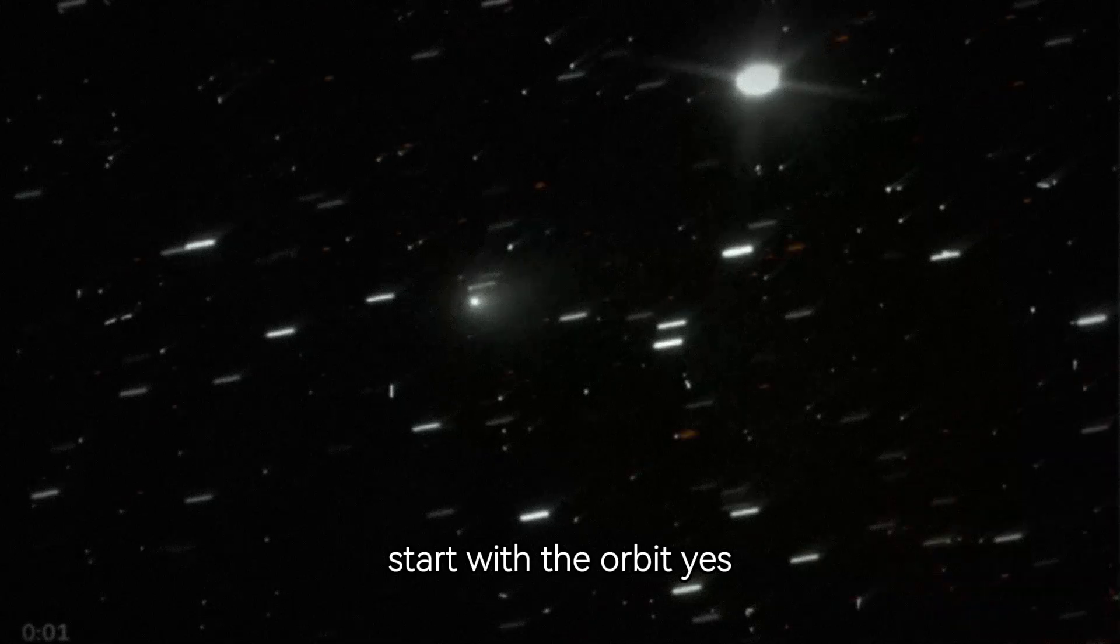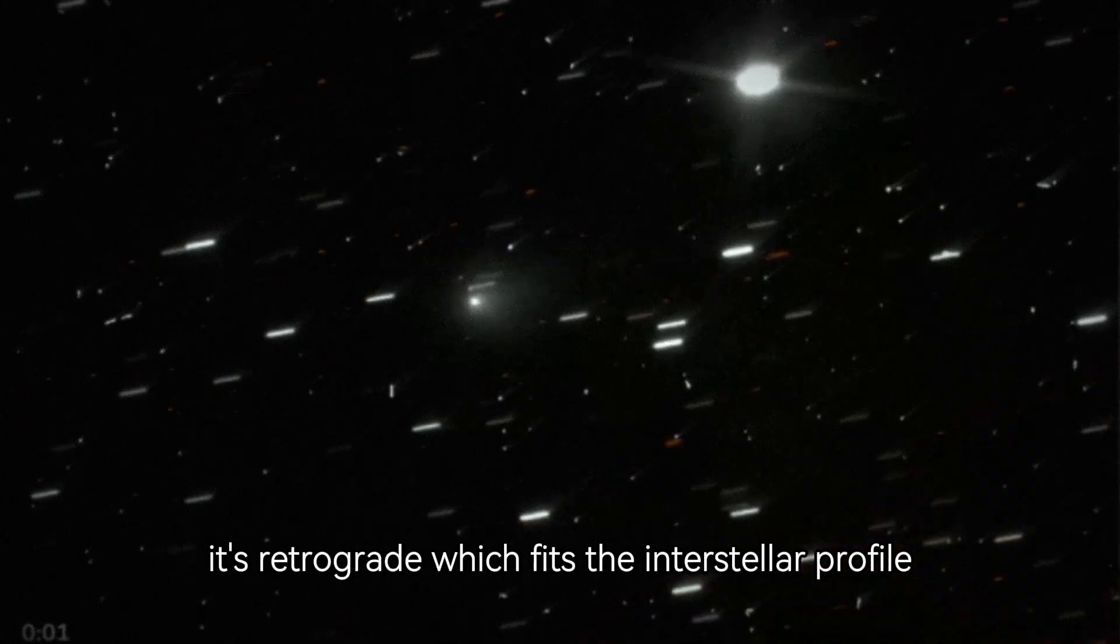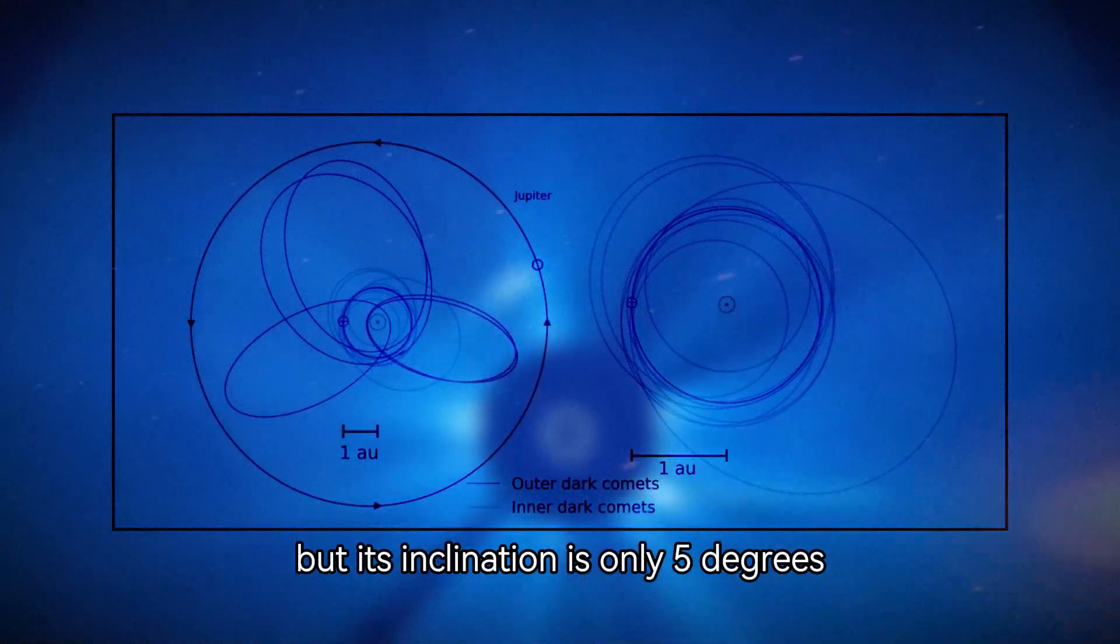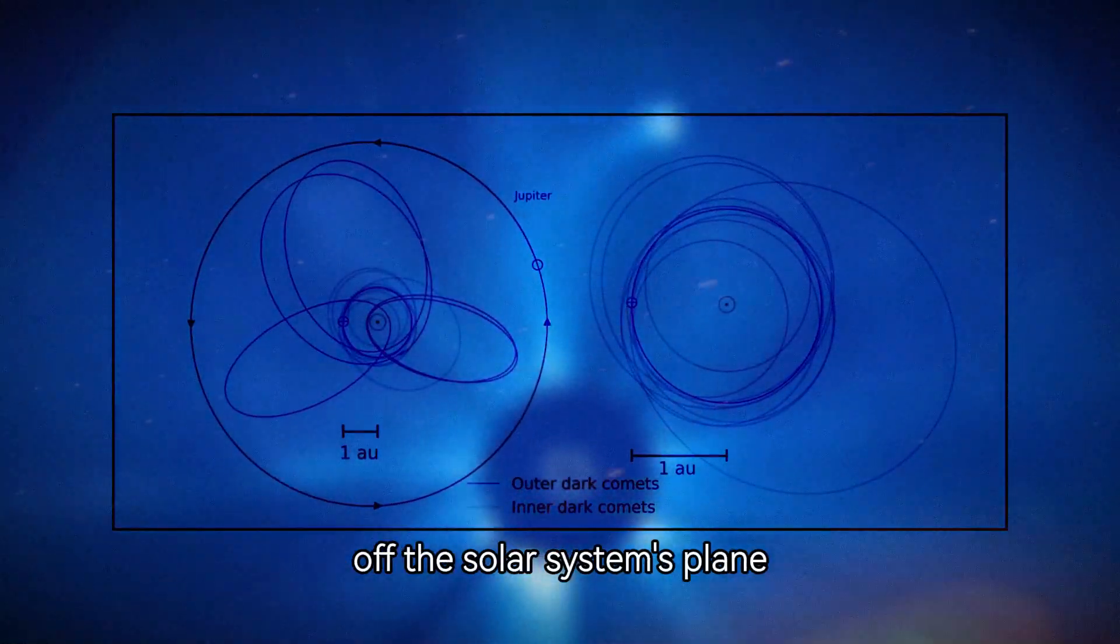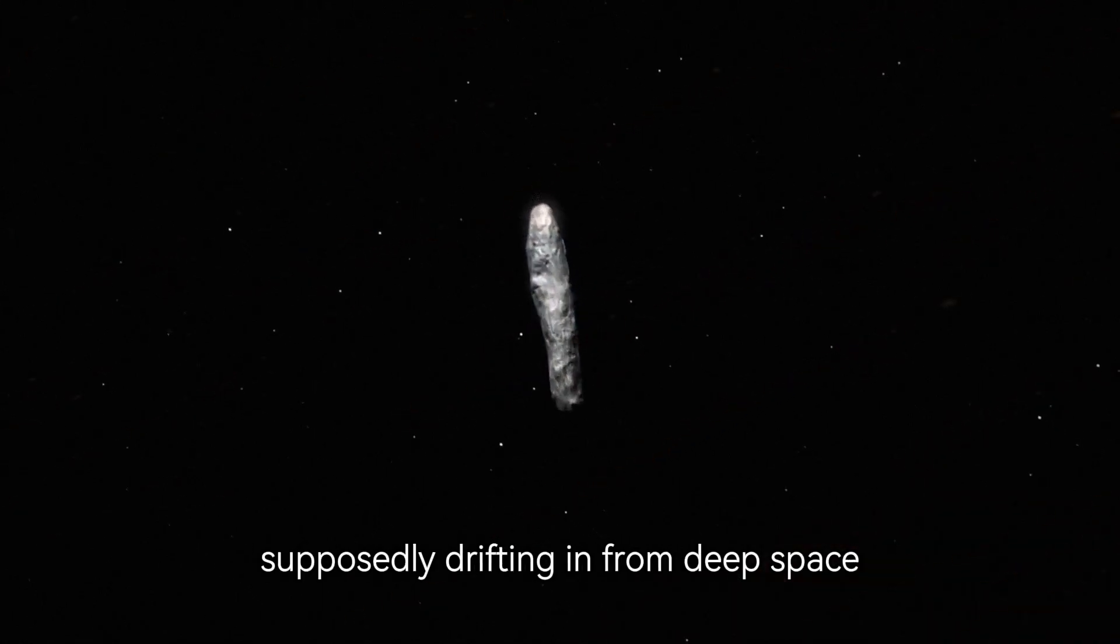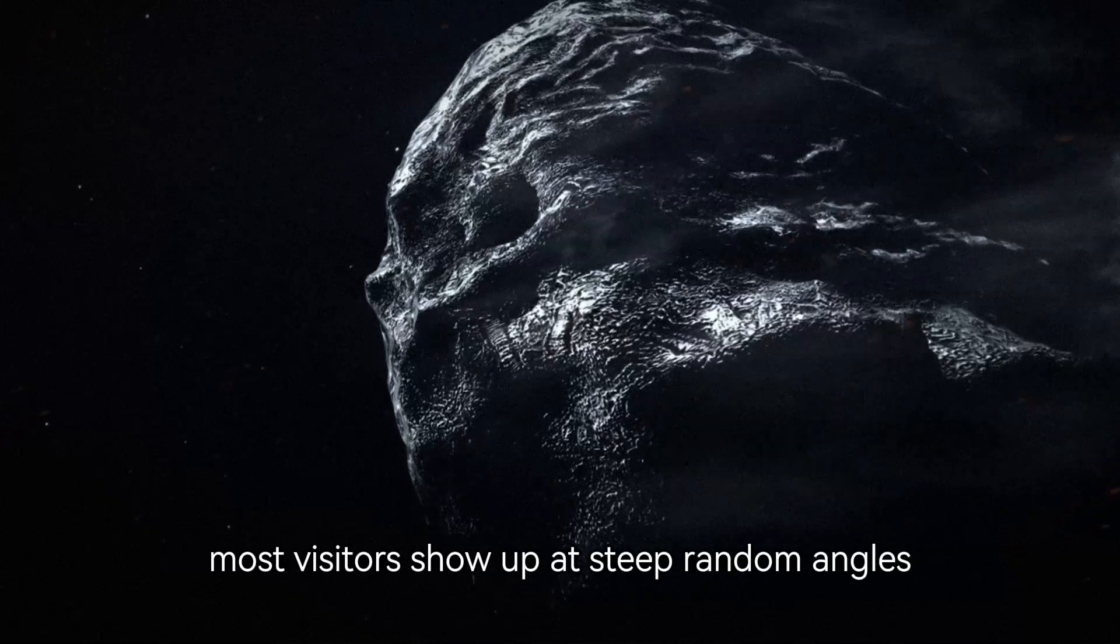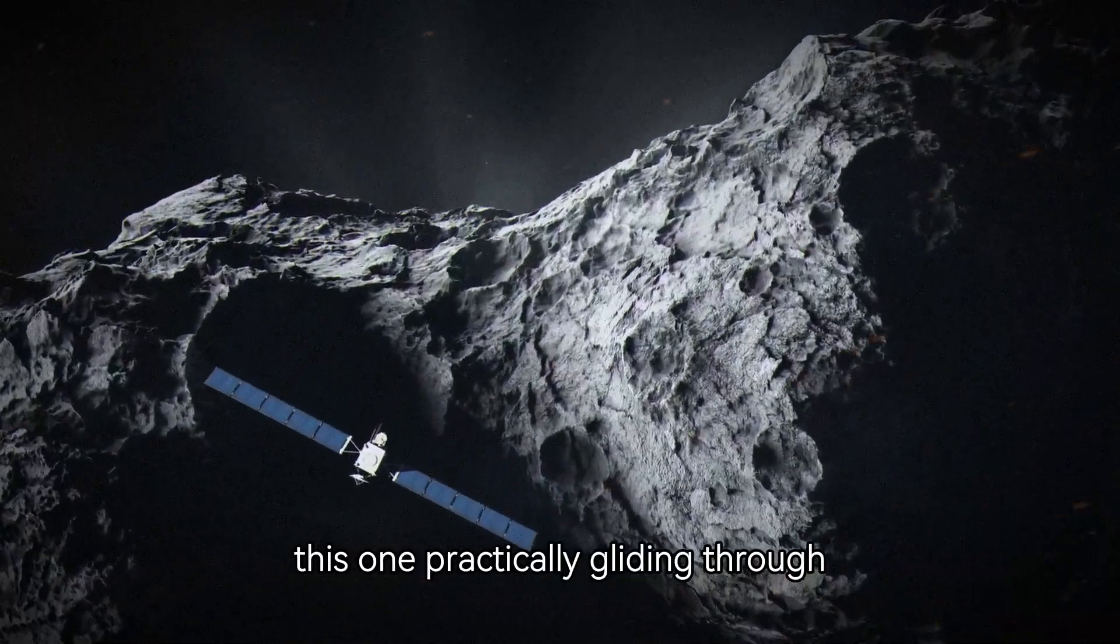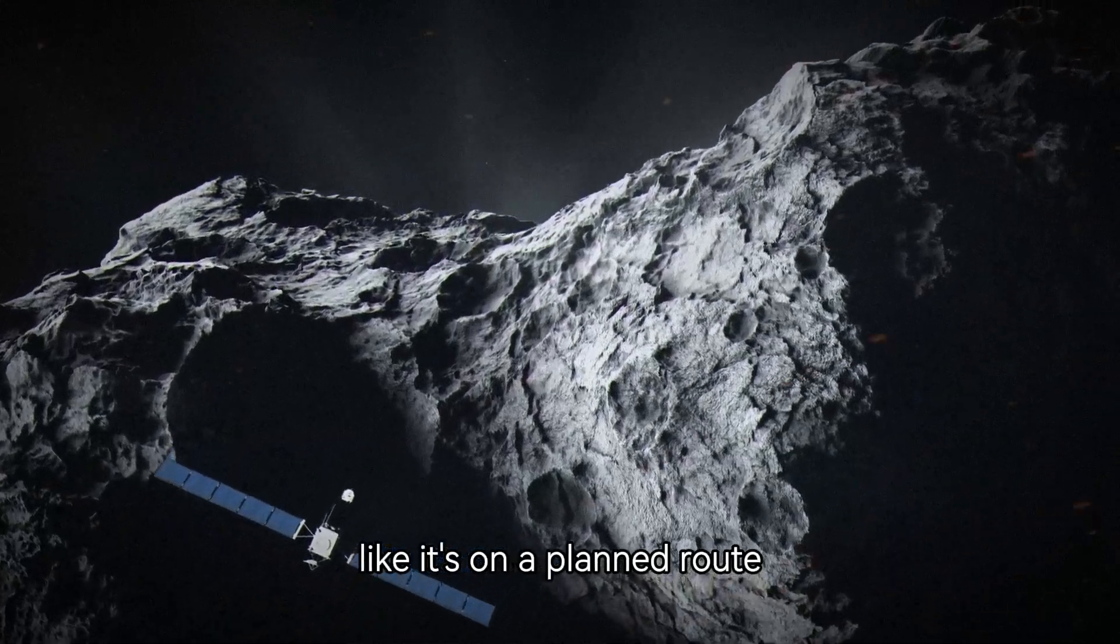Start with the orbit. Yes, it's retrograde, which fits the interstellar profile. But its inclination is only 5 degrees off the solar system's plane. That's way too aligned for something that's supposedly drifting in from deep space. Most visitors show up at steep, random angles. This one? Practically gliding through like it's on a planned route.